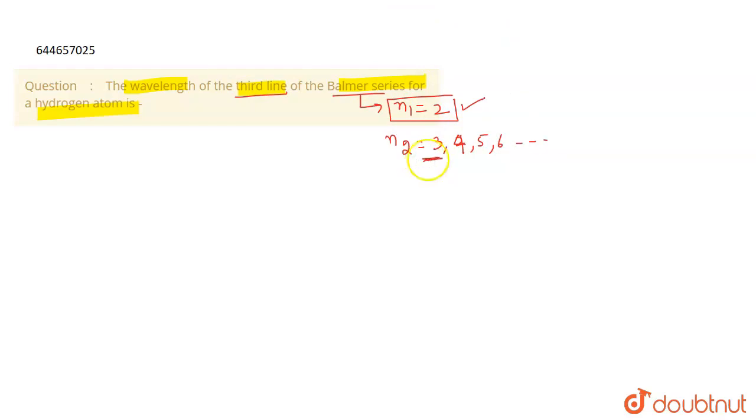So the first line corresponds to the transition of 3 to 2, second line corresponds to the transition of 4 to 2 and the third line corresponds to the transition of 5 to 2. So in this case, n2 is going to be equal to 5.